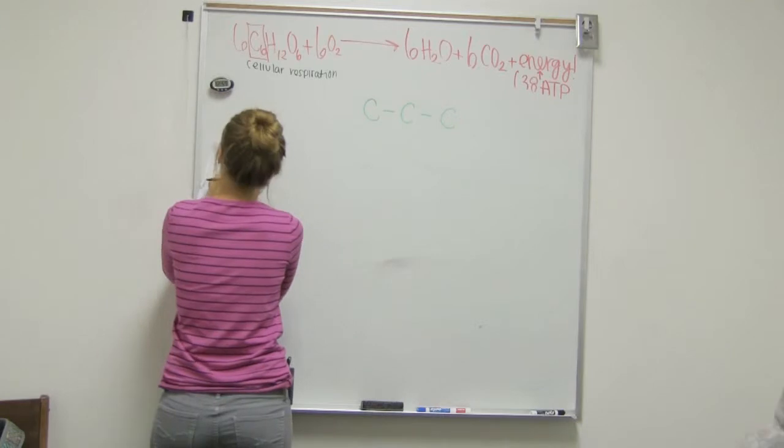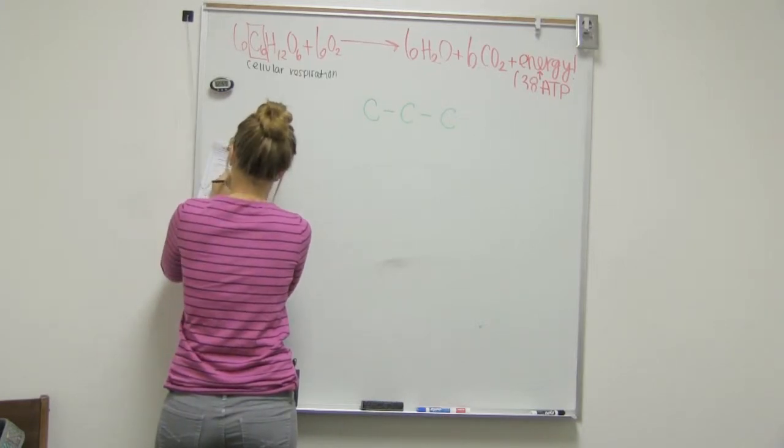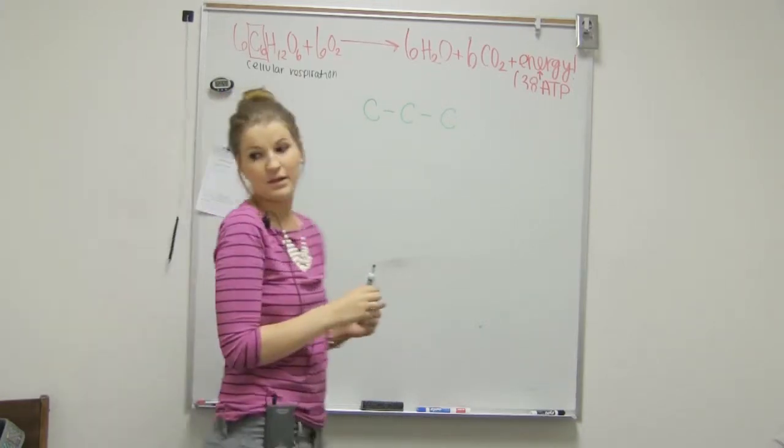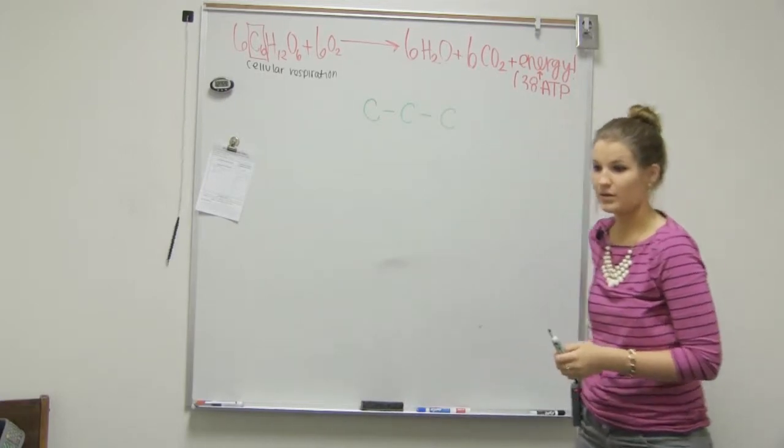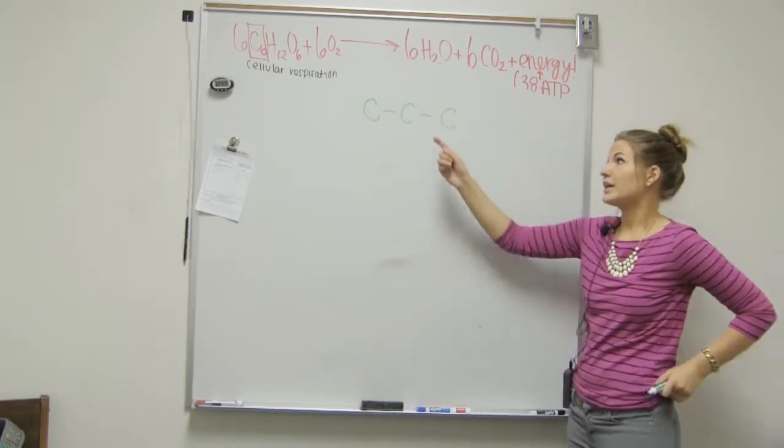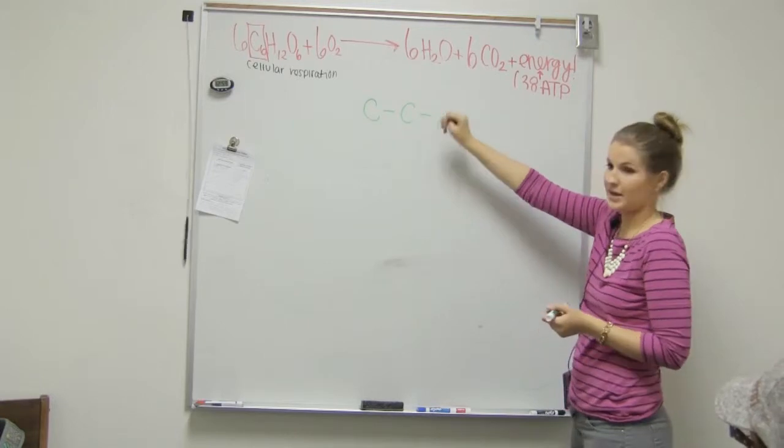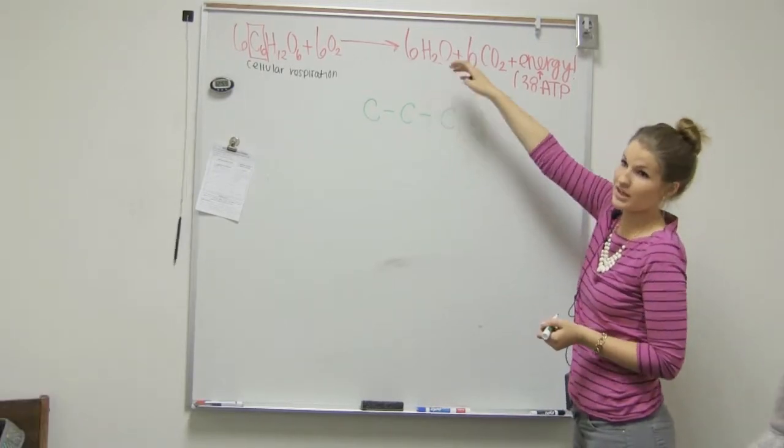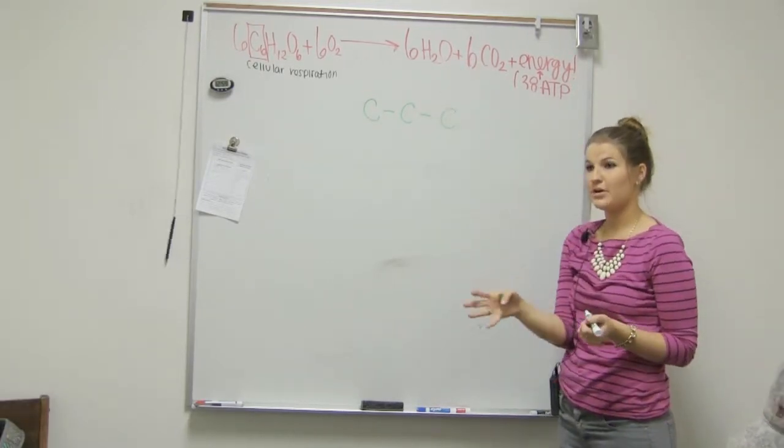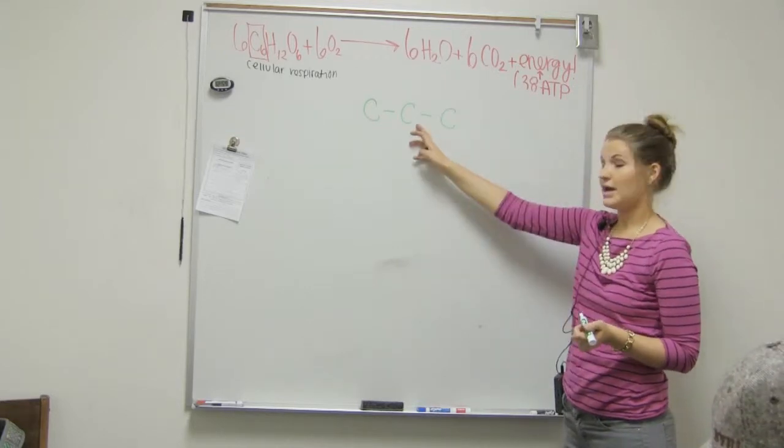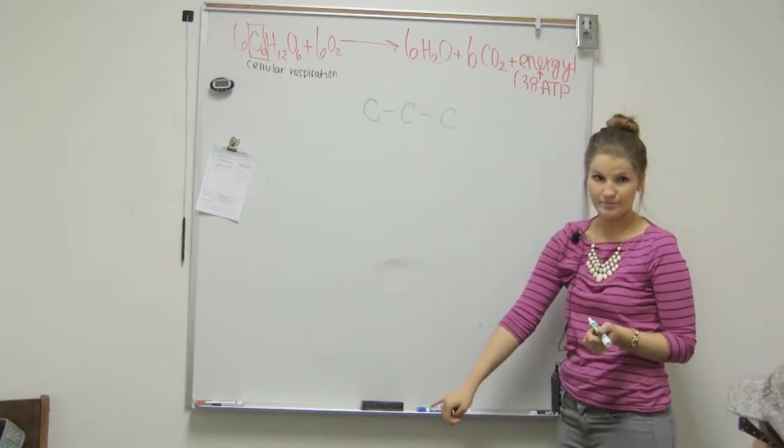So phase two is this. So we're going to have our two pyruvates produced from glycolysis. They're going to then go into the matrix of the mitochondria and become acetyl-CoA. How?